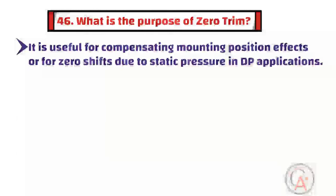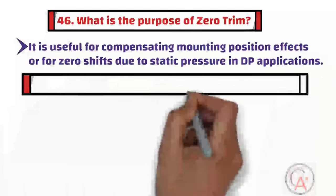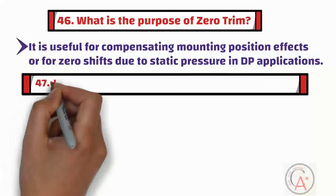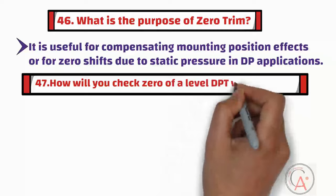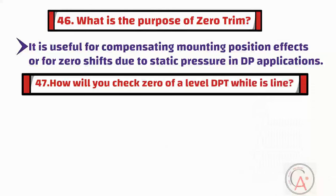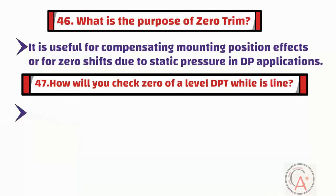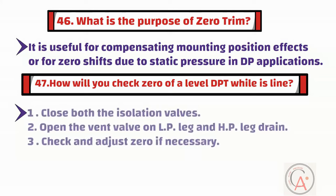The forty-seventh question is: how will you check the zero of a level DP transmitter while it is in line? To check the zero of the DP transmitter, first close both the isolation valves. Then open the vent valve on the LP leg and HP leg drain. Finally, check and adjust the zero if necessary.